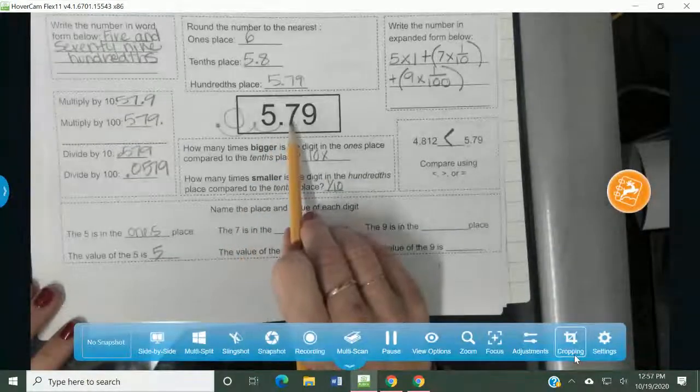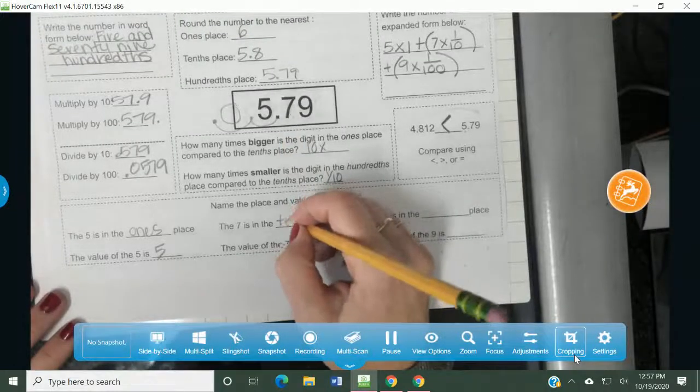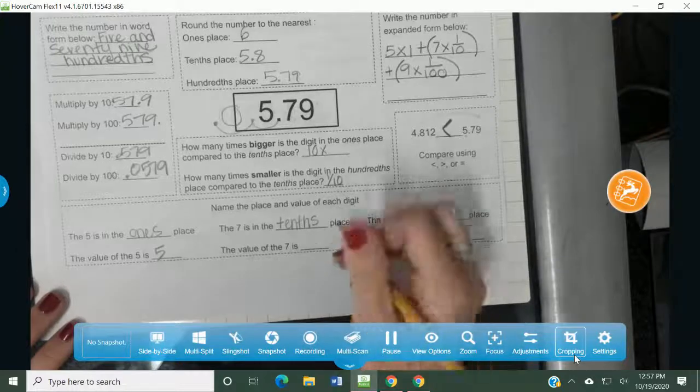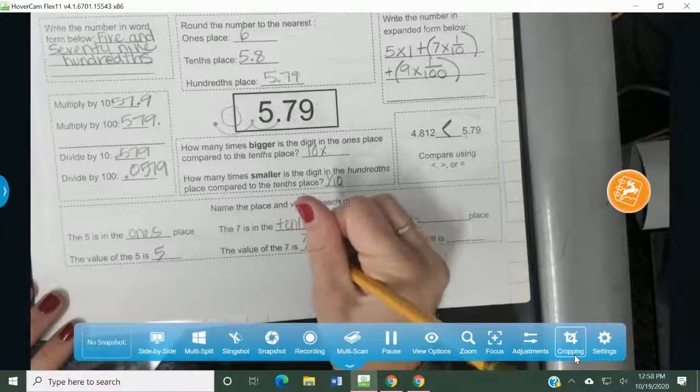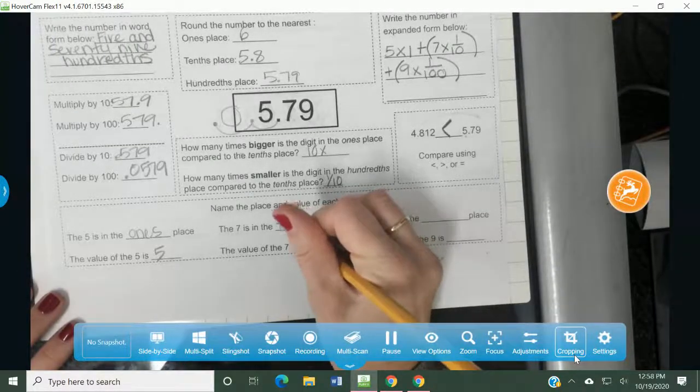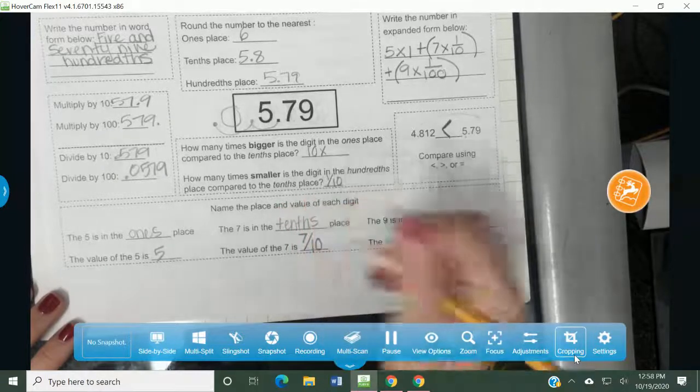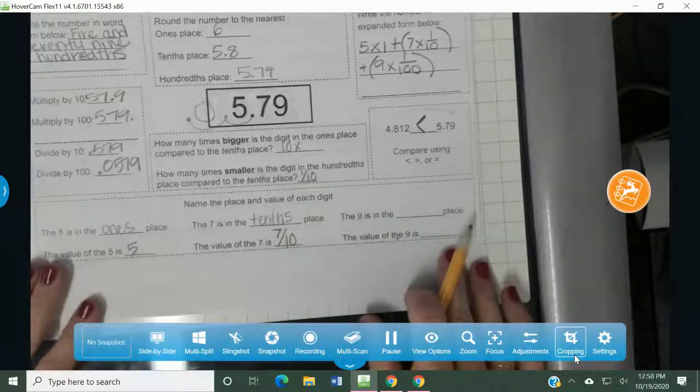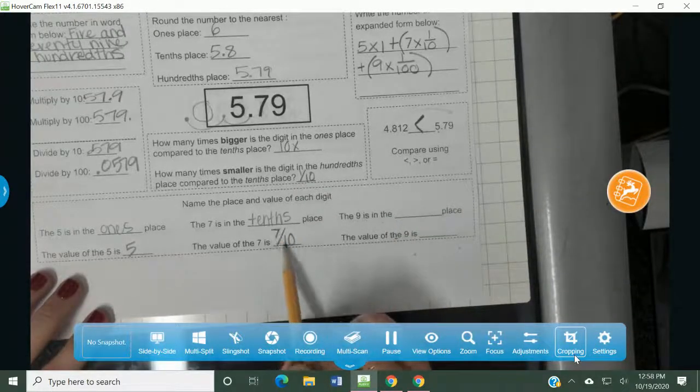The seven is in the tenths place. And the value of the seven is seven tenths. Okay? So be careful with that. Seven tenths. We're going to write it as a fraction. It's worth seven tenths. And that's how you would read this fraction. Seven tenths.